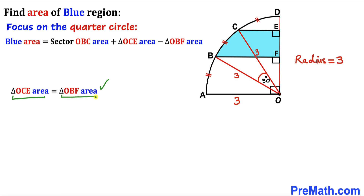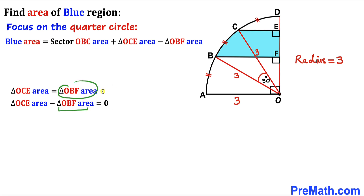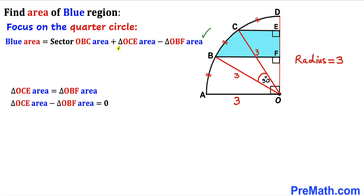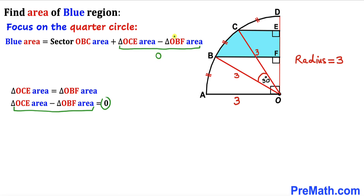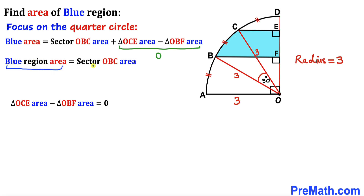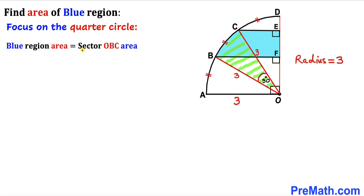Recalling from the previous step that triangle OCE area equals triangle OBF area, if we move the OBF area to the left-hand side we get zero on the right-hand side. Therefore triangle OCE area minus triangle OBF area equals zero. Substituting this back into our equation, the blue shaded region area equals only the sector OBC area, since the triangle terms cancel to zero.